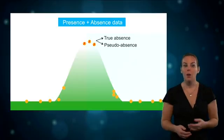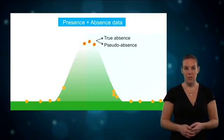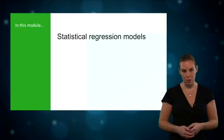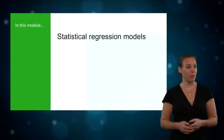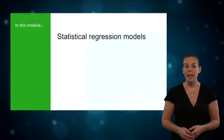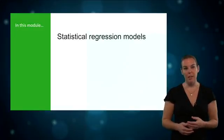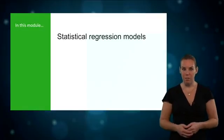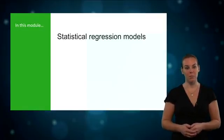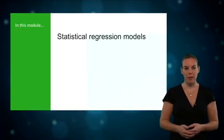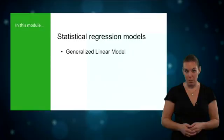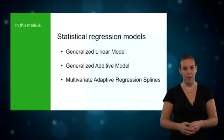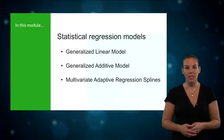Presence-absence algorithms compare the environmental conditions of occurrence sites with those of absence sites. The statistical regression models that I will explain in this module use all the data available to estimate the coefficients of the predictor variables, and they construct a function that best describes the effect of the environmental variables on species occurrence. The suitability of a particular model is often defined by specific model assumptions. In this module I will explain the background of three different models: generalized linear models, generalized additive models, and the multivariate adaptive regression splines technique. These models are an extension of simple linear regression models.